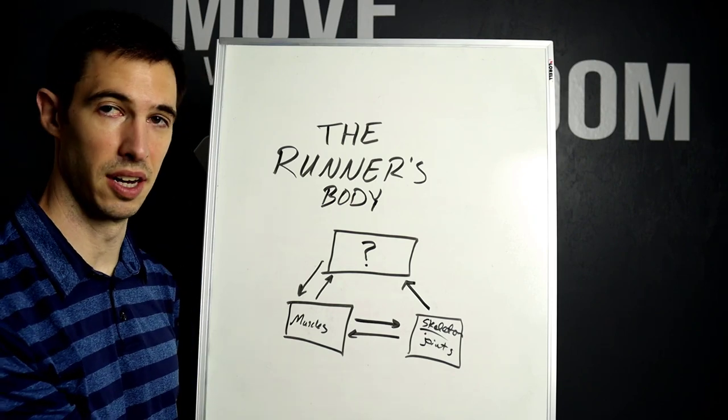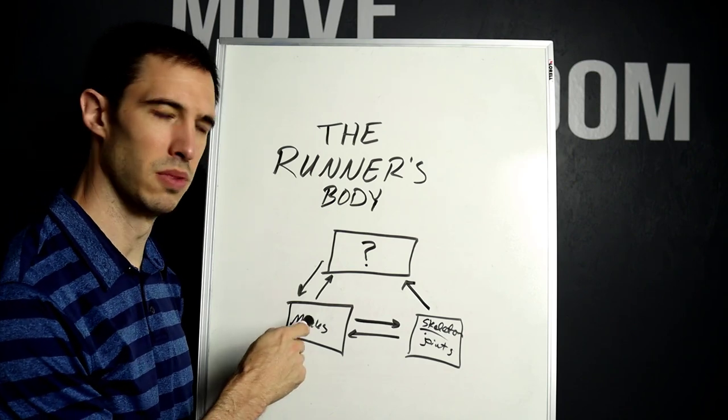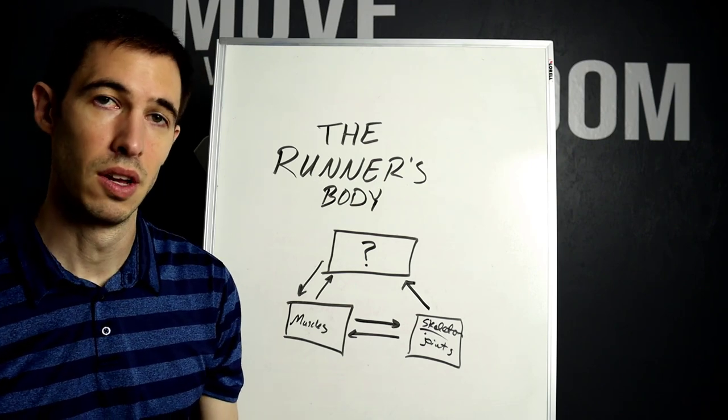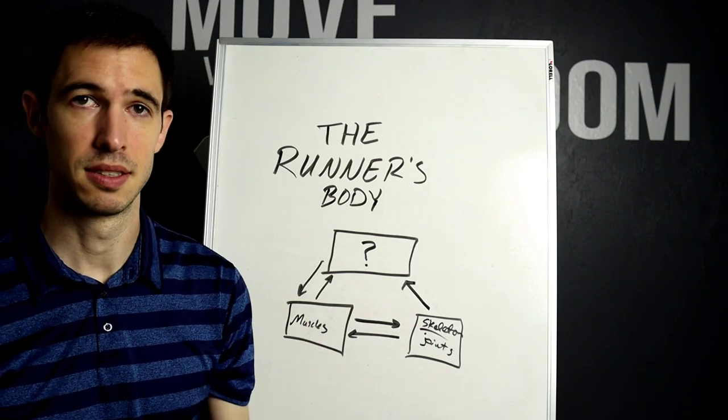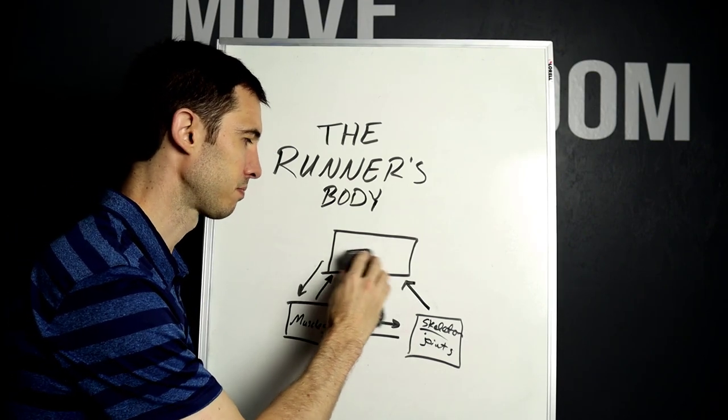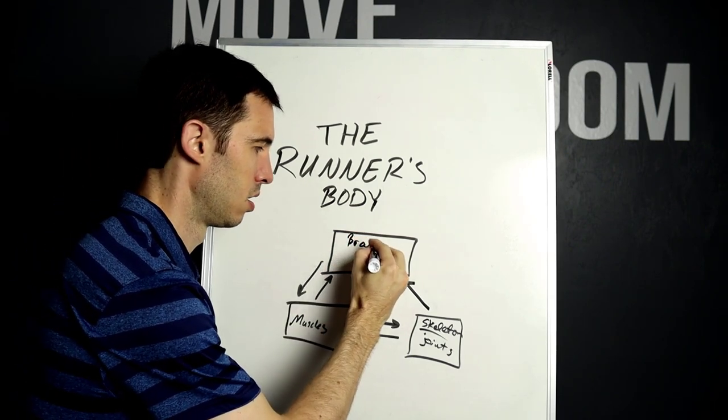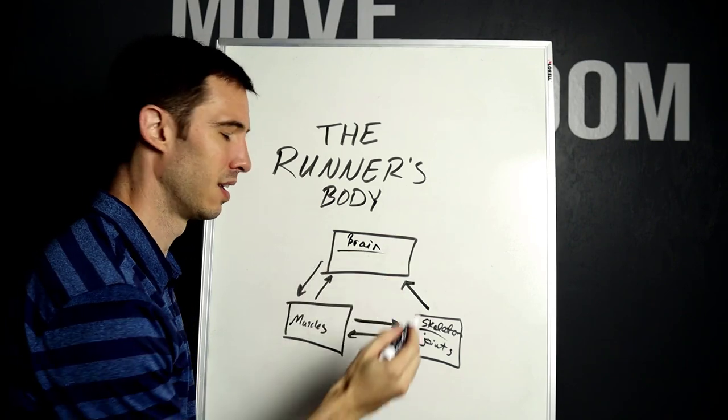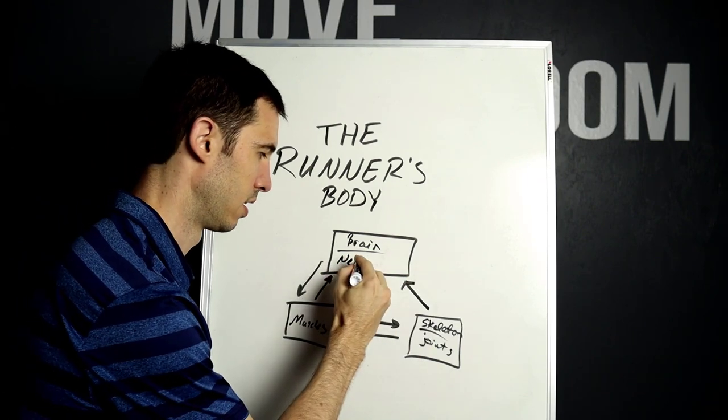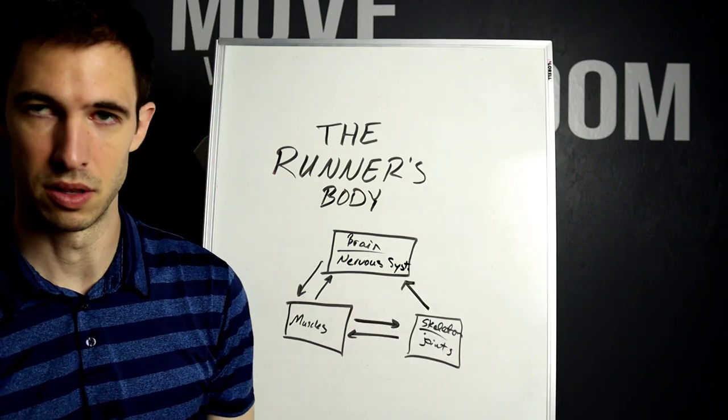Now the arrows here are indicating some things I want to talk about here in a second, but in order for those muscles to actually contract, we have to be able to send those muscles a signal that creates that contraction. So the third part of the runner's body is actually the brain. The brain and not just the brain, but the nervous system in its entirety.